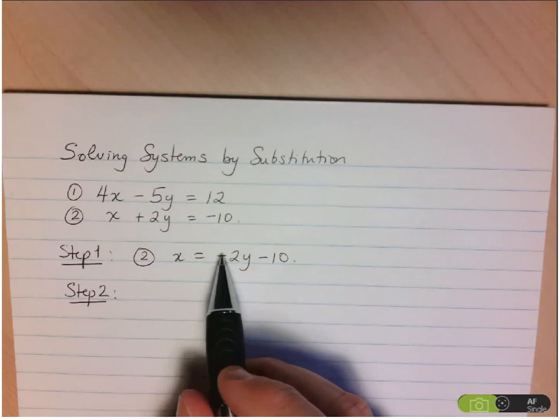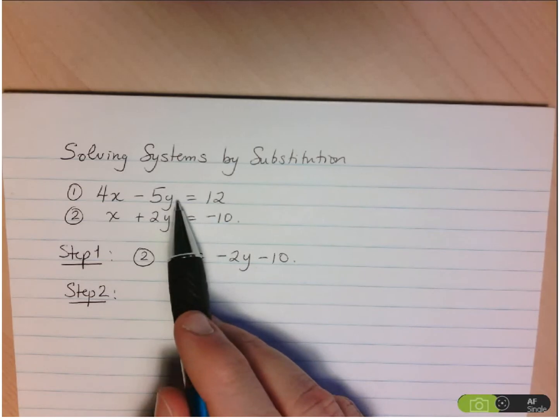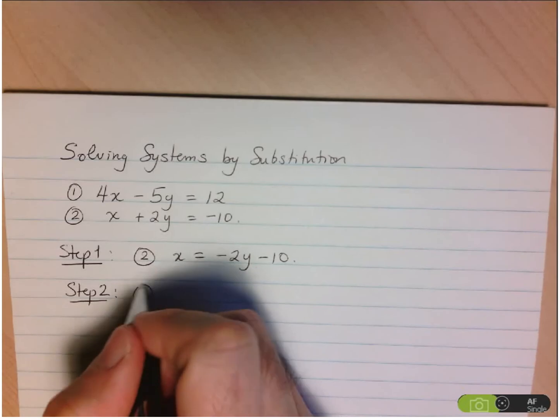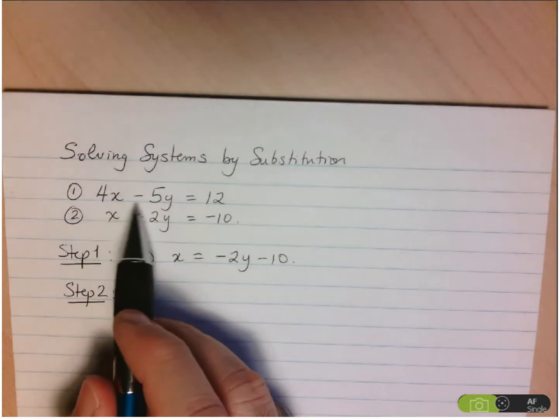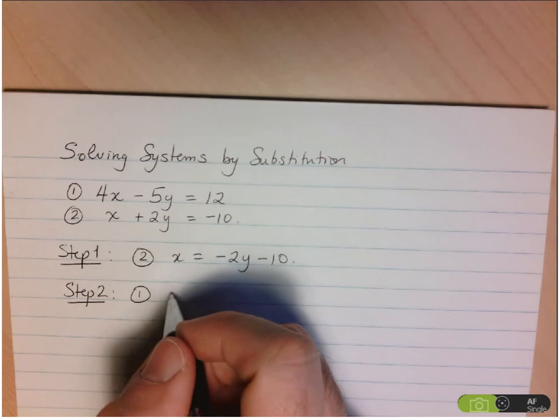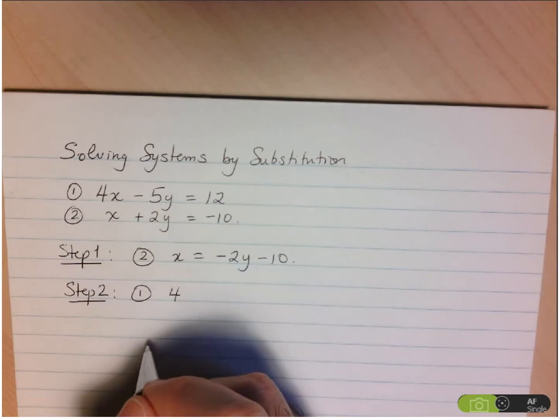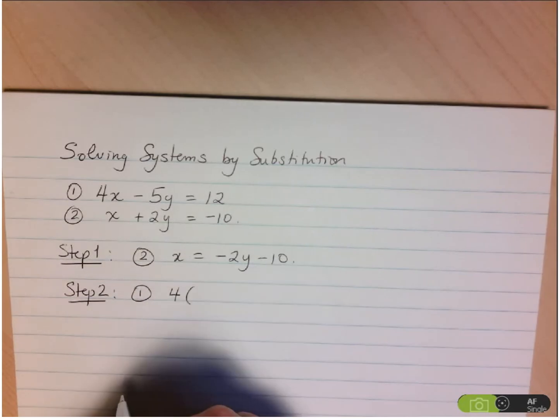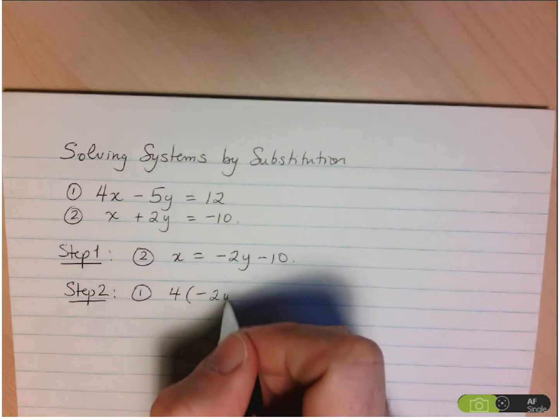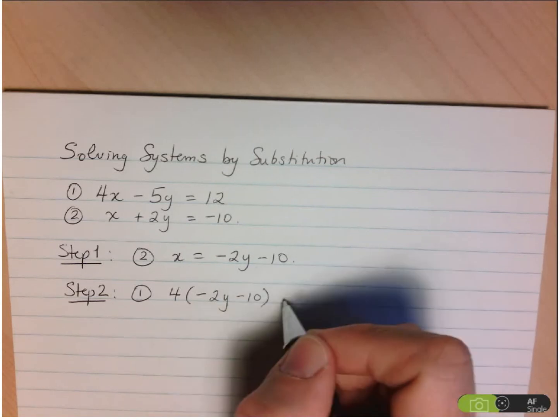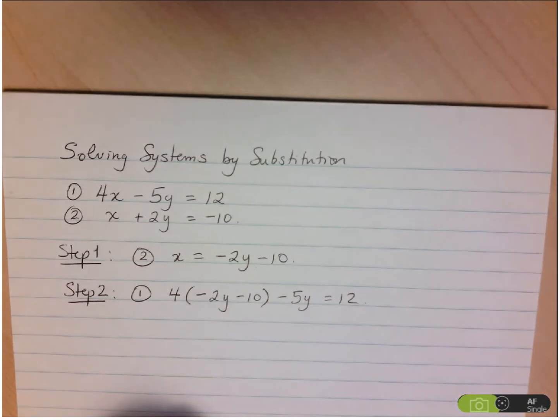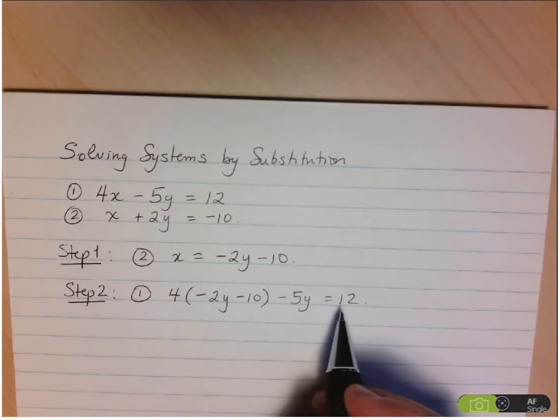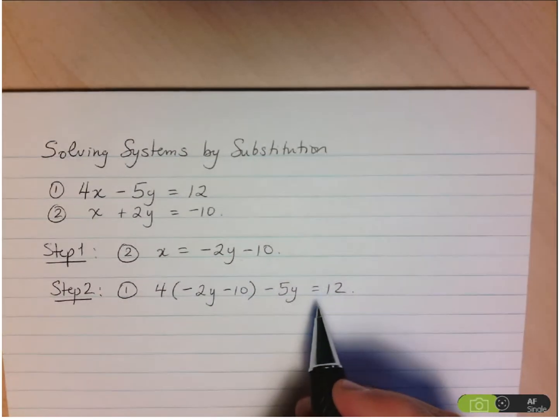So we always substitute into the equation we haven't used. So that's why here I have to use equation 1. So equation 1 is 4x minus 5y equals 12. Whereas I'm going to now substitute x for its equivalent expression, which is negative 2y minus 10. Then I've got minus 5y equals 12. Now what I have is one equation with one unknown, and this is something I can solve.